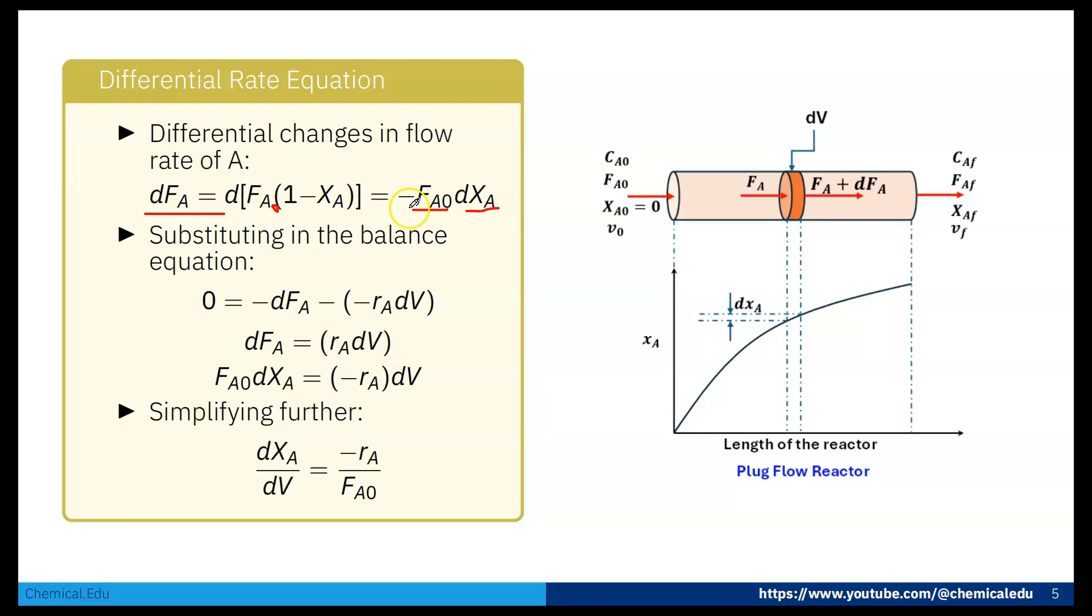So dFA is minus FA0 dXA. This minus will come here, so that is nothing but minus rA into dV. So you can write minus FA0 dXA is equal to minus rA into dV. This minus will cancel, and that will be FA0 dXA is equal to minus rA dV. Simplifying further: dXA by dV is equal to minus rA by FA0. That is the design equation for plug flow reactor.